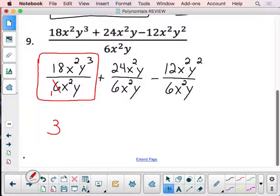Because these are both divisible by 6, so I get 3 over 1. The x squareds are going to cancel completely, so I won't have any x squareds in my solution. And that 1y down there will cancel one of these y's and leave me with two of them. So I should end up with 3y squared as my first term in my answer.